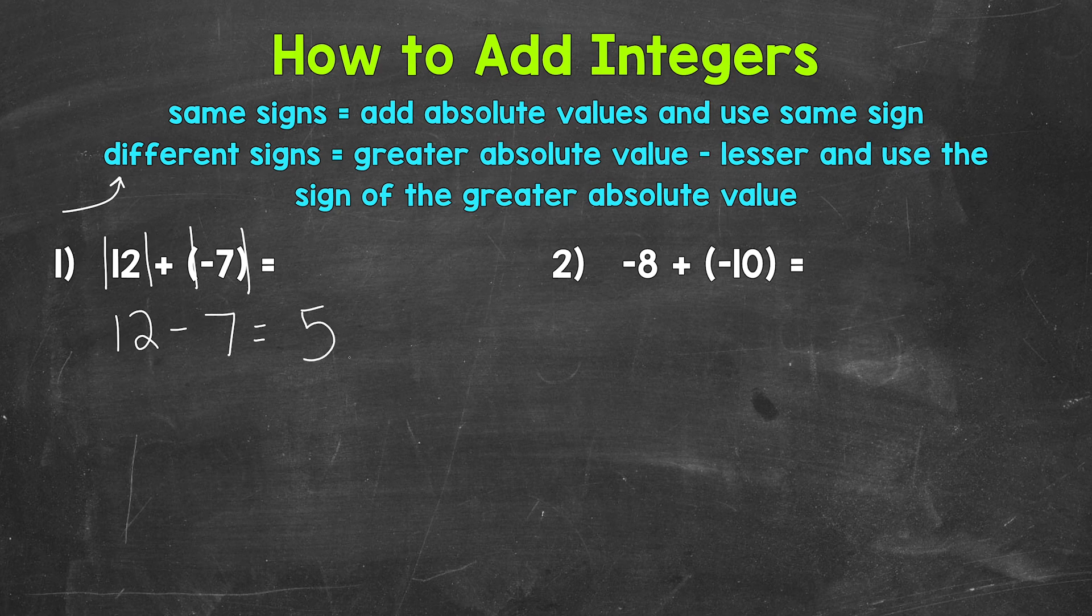Now we need to determine if our answer is going to be positive or negative. So we need to take a look at the larger absolute value, which is this 12. So we take the sign of the larger absolute value from the original problem. So the larger absolute value is 12.